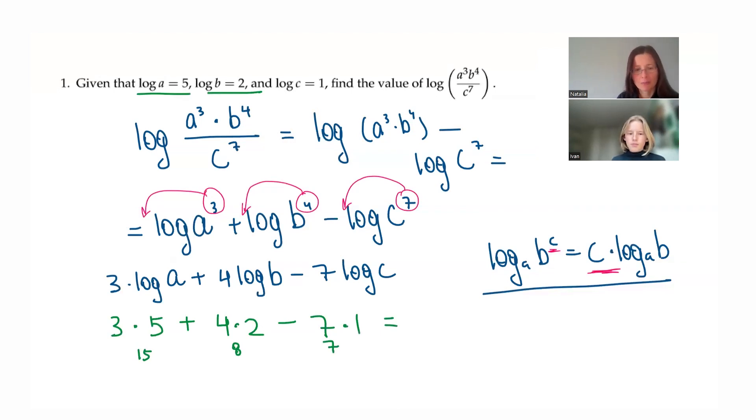16. Mm-hmm. Yeah, I can do 15 minus seven maybe, and then plus eight. Or actually, no, eight minus seven, and then that's one plus 15. This is 16. Very good. So we discussed how logs and exponents relate, and then three rules that we used here for the product quotient and the exponents.